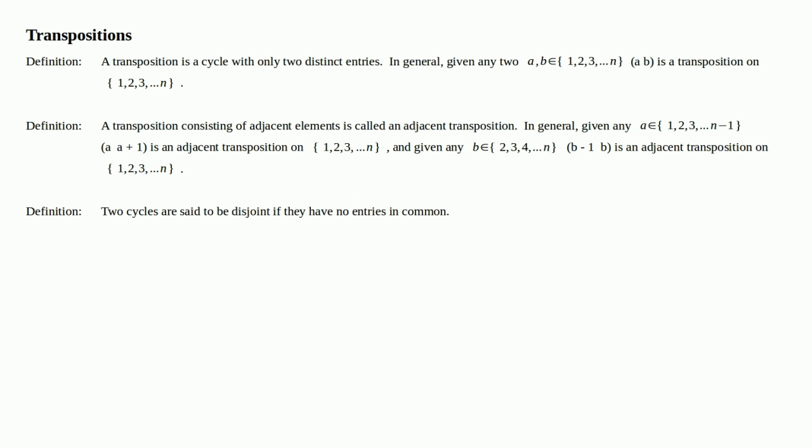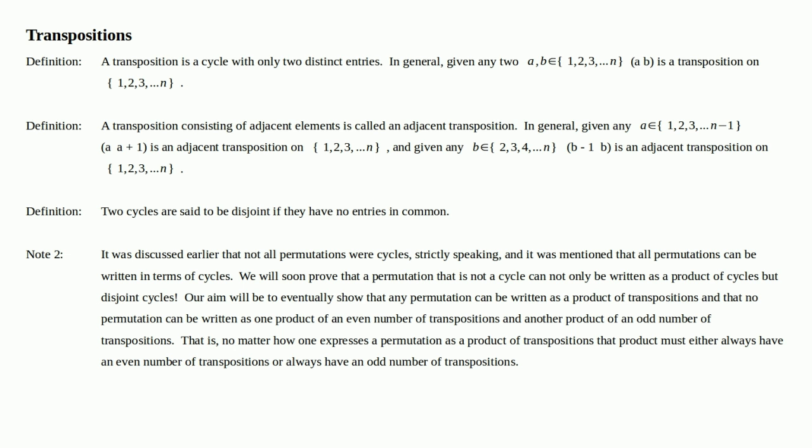Moving right along, note also that it was discussed earlier that not all permutations were cycles, strictly speaking. It was mentioned that all permutations can be written in terms of cycles. We will soon prove that a permutation that is not a cycle can not only be written as a product of cycles but disjoint cycles.